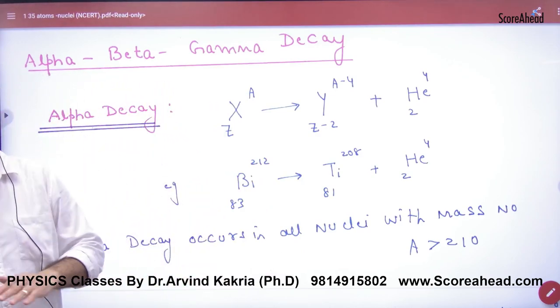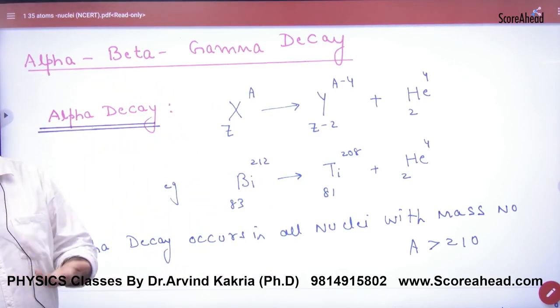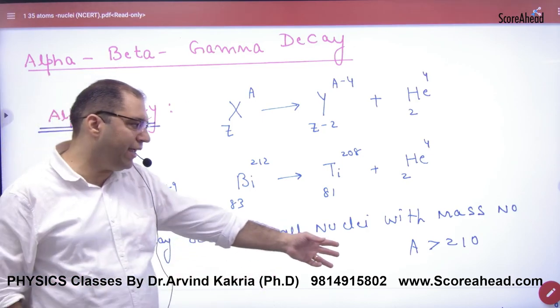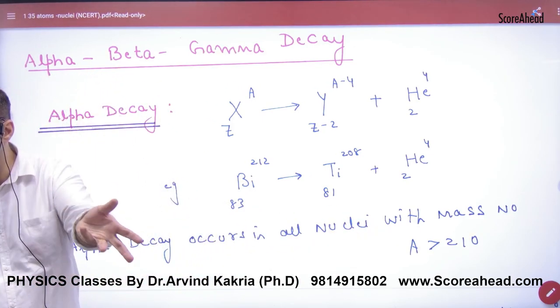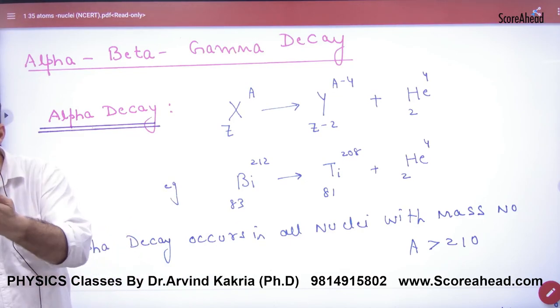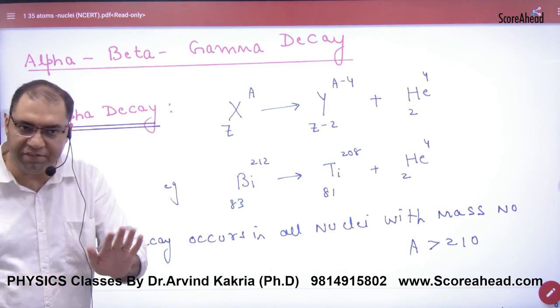Alpha particle normally comes out when the mass number of any atom is greater than A, in the big nucleus, in the big atom. So it's clear, alpha particle decay, alpha decay, this point is coming out.